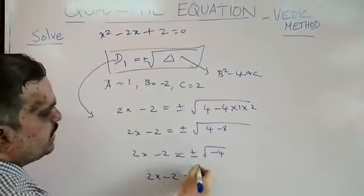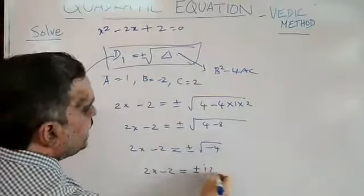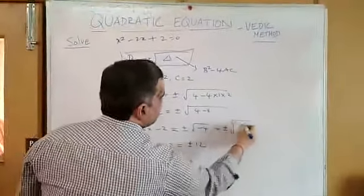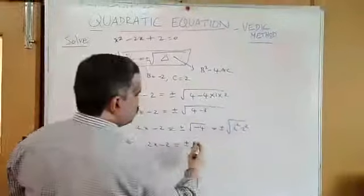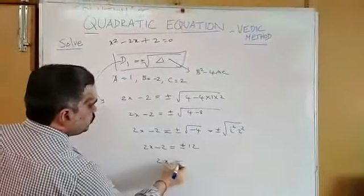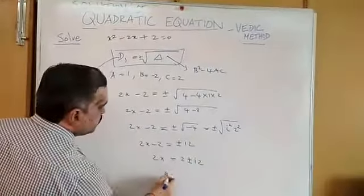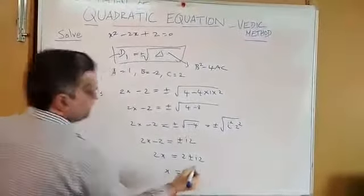So here, i root 2. i square is equal to plus or minus i square. 2 square, plus or minus i root 2. 2x is equal to 2 plus or minus i 2. Dividing by 2, you are getting 1 plus or minus i.